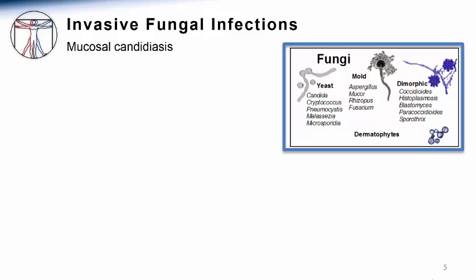Among the fungi that cause disease in humans, Candida species are common commensal microorganisms on skin and mucosal surfaces. They grow predominantly in culture in a round, yeast-like form, but they can transition to other morphologies.